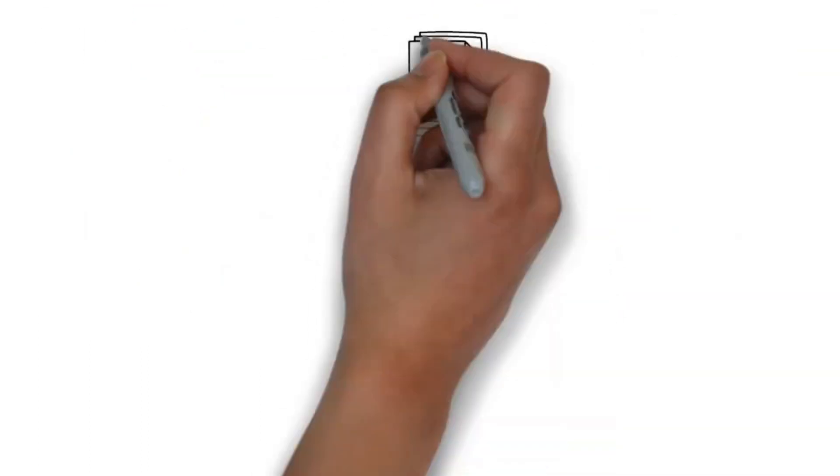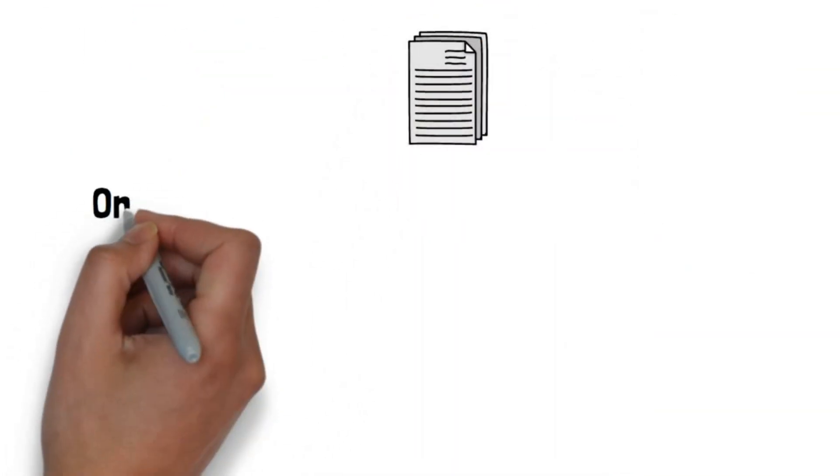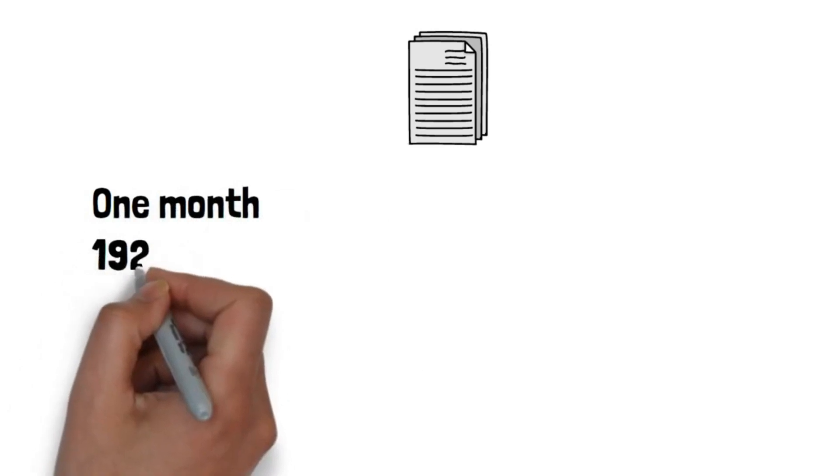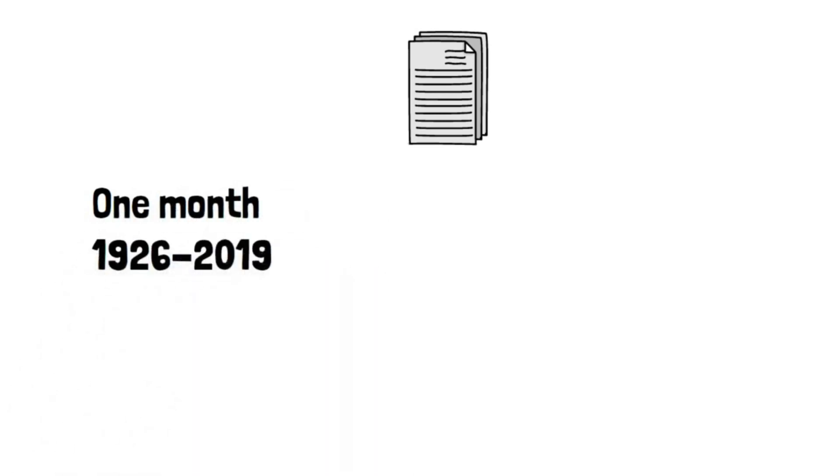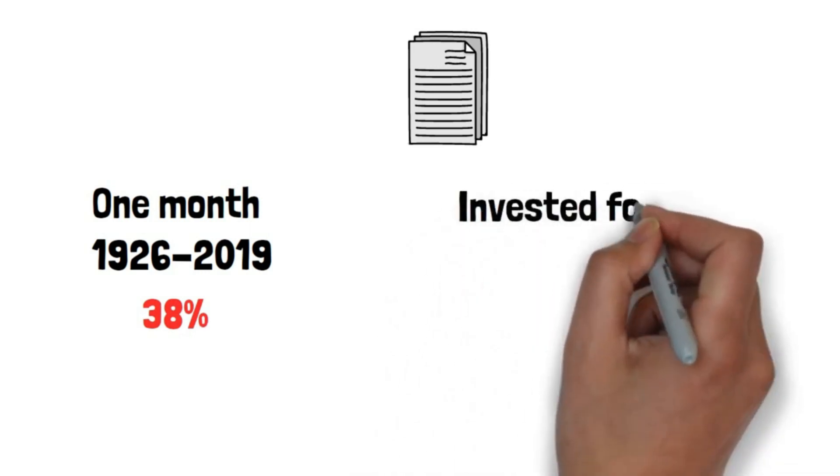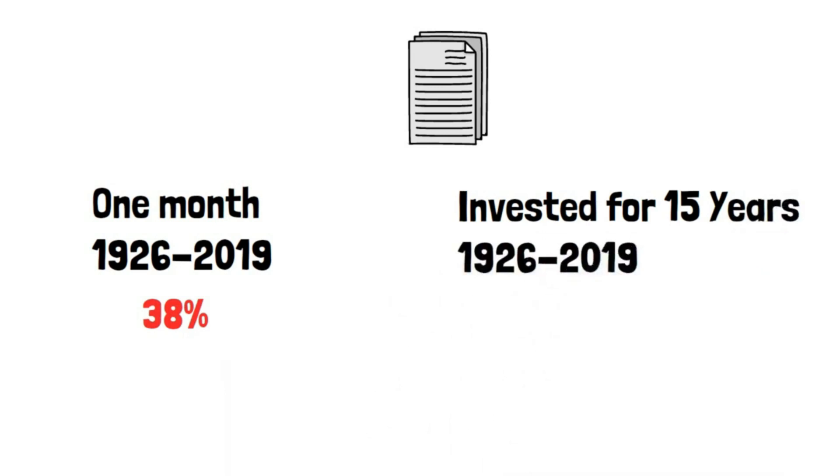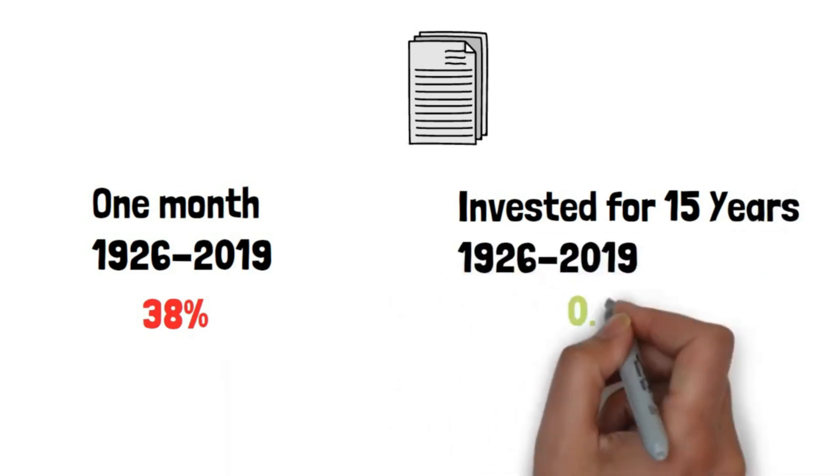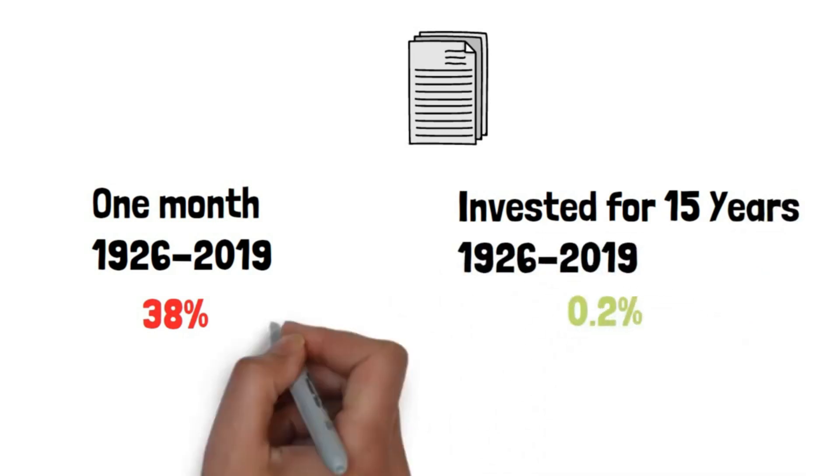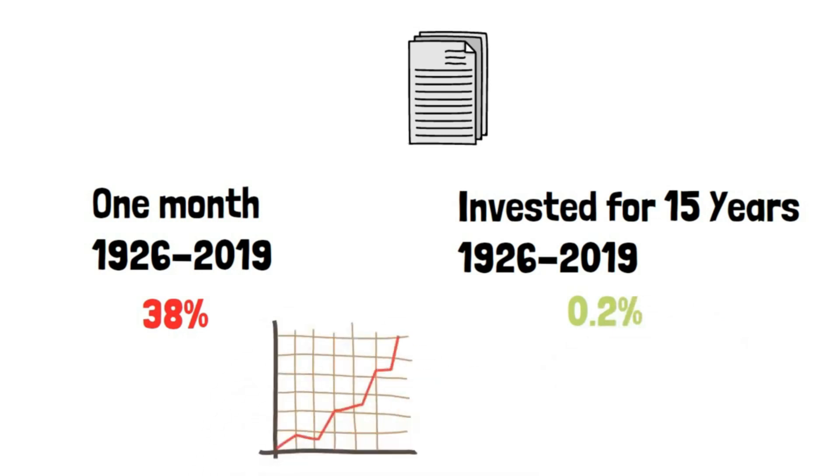According to the data, investors who stayed in the market for only one month between 1926 and 2019 had a 38% probability of losing money. At the other end of the spectrum, people who invested for 15 years between 1926 and 2019 had a 0.2% probability of losing money.